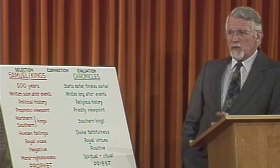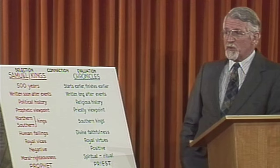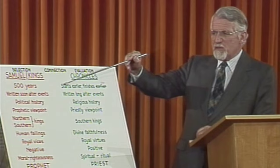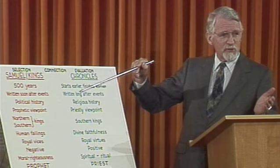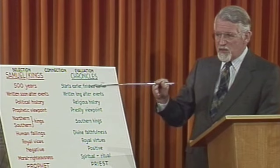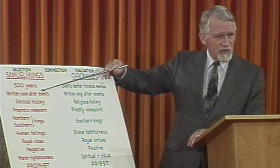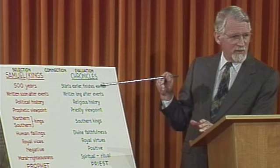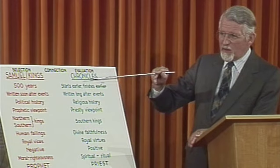Samuel and Kings together — only two books in the Hebrew Old Testament but four in ours — cover a period of 500 years only. But Chronicles starts much earlier and finishes later. It goes way back to Adam, right back through the centuries to the very beginning of the human race, and it finishes later — and this is the key to the difference. Samuel and Kings finish in the exile, but Chronicles ends with the return — 'let us go up to Jerusalem' is the last word in Chronicles.